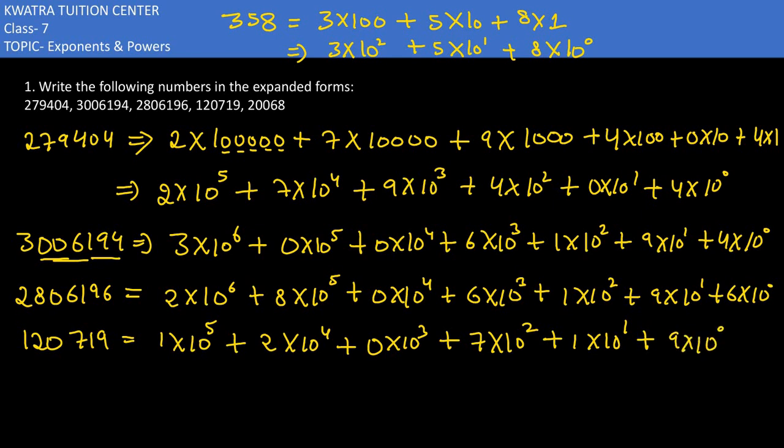Then we have 20068. 2 would be 10⁴, then 0 into 10³, next would be 0 into 10², then 6 into 10¹, then 8 into 10⁰. So that's it.